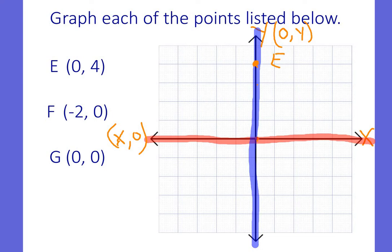Negative 2, 0. The negative 2 means I'm going to go left. Negative 2, and then I'm not going to go up or down. So that's F.